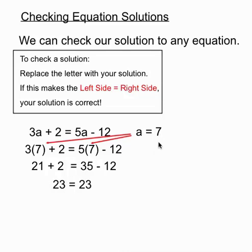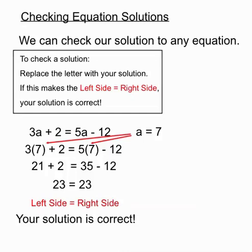And our solution of a equals 7 has created a left hand side of 23 and a right hand side of 23. It's created the left hand side equal to the right hand side, so we know that solution is correct, and we can check out the rest of our paper.